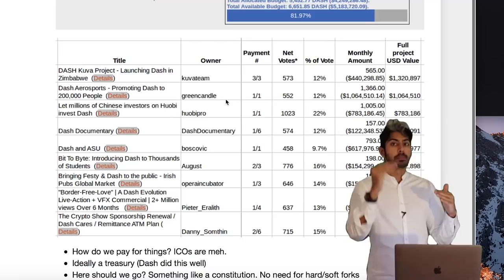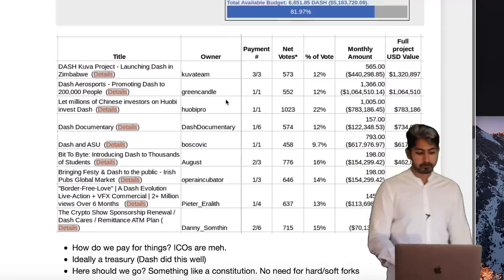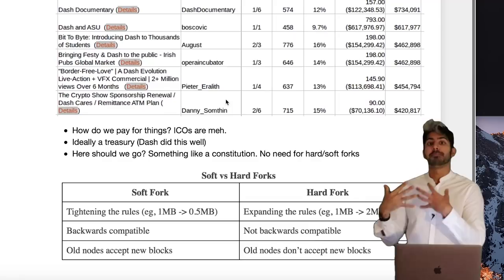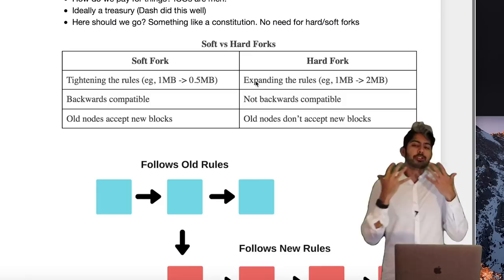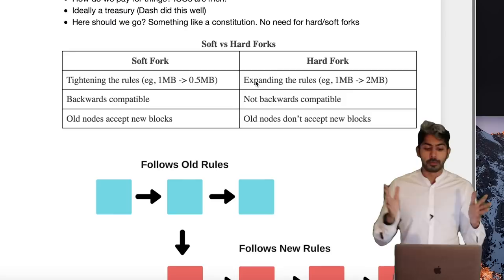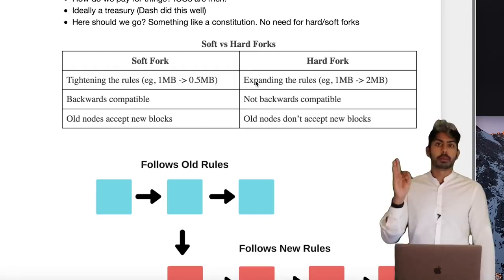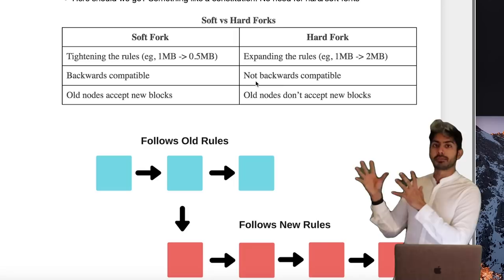Cardano has adapted this treasury model. Governance is a very hard problem — even with Ethereum there's been the hard fork and soft fork debate. Hard forking is not backwards compatible — it's a completely different type of network. Soft forking means old nodes have to upgrade or they're no longer part of the network.